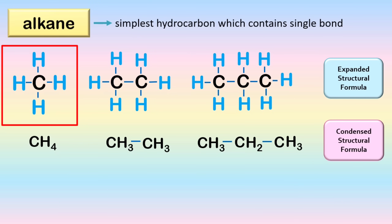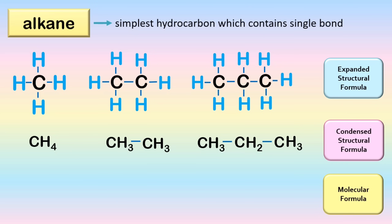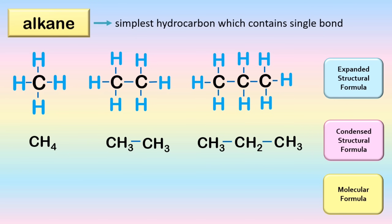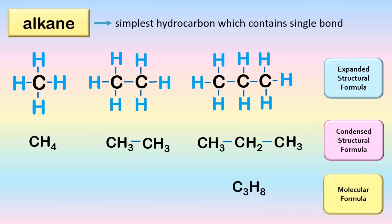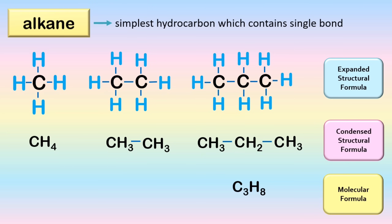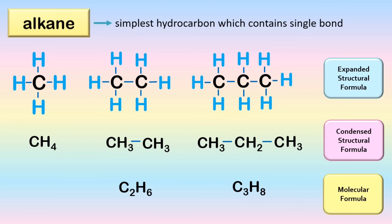This expanded and condensed structural formula can be compressed into molecular formula. Molecular formula consists of chemical symbols for the constituent elements followed by numeric subscripts describing the number of atoms of each element present in the molecule. For the condensed structural formula CH3CH2CH3, we have three carbons and eight hydrogen, so the molecular formula is C3H8. For CH3CH3, we have two carbons and six hydrogen, giving C2H6. And for CH4, the molecular formula is CH4.